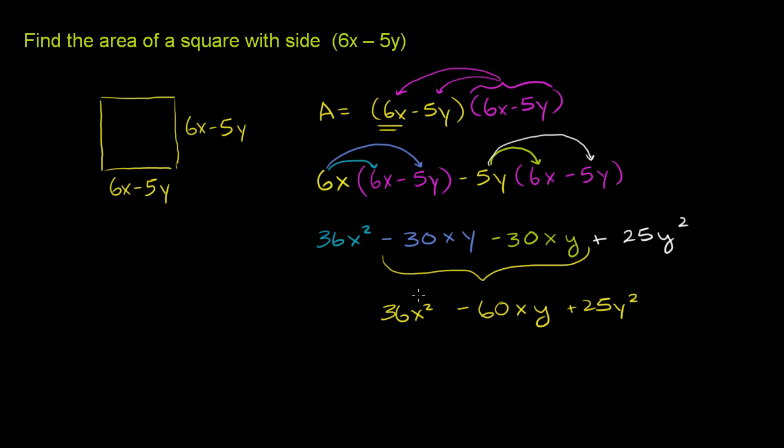Now, there is a faster way to do this. If you recognize that if I'm squaring a binomial, which is essentially what we're doing here. This is the exact same thing as 6x minus 5y squared. So you might recognize the pattern. If I have a plus b squared, this is the same thing as a plus b times a plus b. And if you were to multiply it out this exact same way we just did it here, the pattern here is...